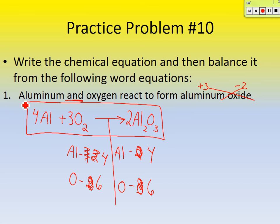We're combining what we did with naming ionic compounds in Chapter 5 with balancing equations here in Chapter 6 — it gets a little complicated. Before we go on, what are the seven diatomic molecules? Oxygen, hydrogen, nitrogen, bromine, chlorine, iodine, and fluorine. Or just remember: ostriches never fly high in brown clouds.